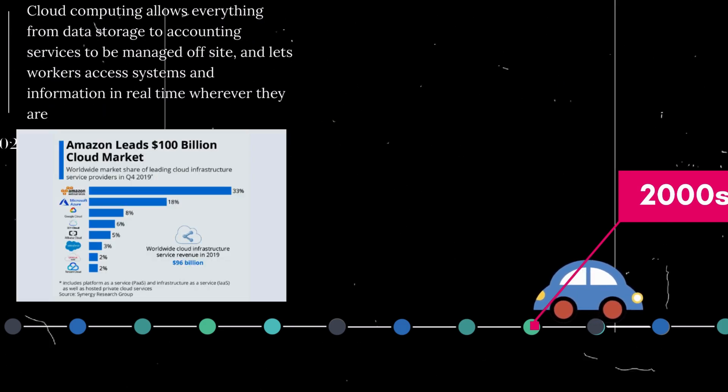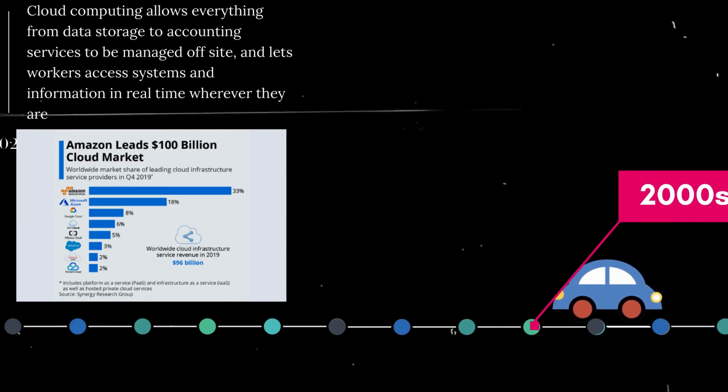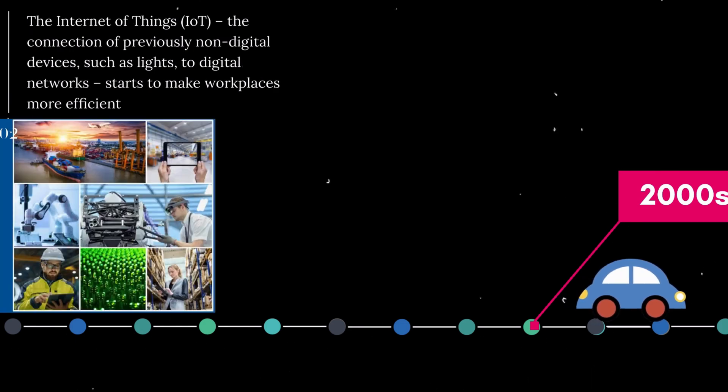Cloud computing allows everything from data storage to accounting services to be managed off-site, and lets workers access systems and information in real-time wherever they are. The Internet of Things - IoT - the connection of previously non-digital devices such as lights to digital networks, starts to make workplaces more efficient.